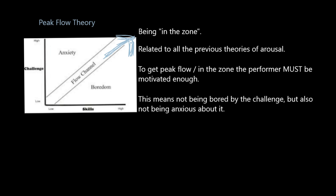Even though it doesn't look like the other theories, peak flow is related to all the previous theories of arousal. If you're going to get peak flow — in your flow channel or in the zone — the performer must be motivated enough to be at optimal arousal level. You've got to be in the zone of optimal arousal for catastrophe or inverted U, or have a high arousal level if you're an extrovert, experienced performer, or performing a simple skill, or lower arousal levels if you're an introvert, performing a complex skill, or a novice — as per drive theory.